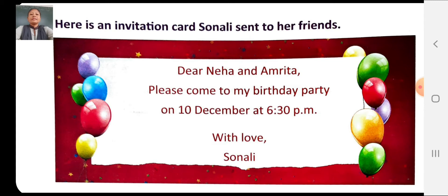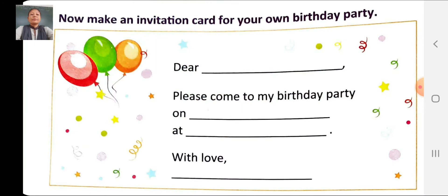This is an example of how you have to write an invitation letter for your own birthday party. Now you have to write one yourself. Dear dash — write your friend's name. Please come to my birthday party on dash — write the date of your birth. At dash — write the time.